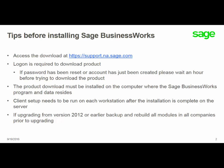Some tips before installing Sage BusinessWorks: access the download at support.na.sage.com. A login is required to download the product. If you have recently reset your password or the account has just been created, please wait an hour before trying to download the product. The product download must be installed on the computer where the Sage BusinessWorks program and data resides. You will not download the software on a client computer — the client setup needs to be run on each workstation after the installation is complete on the server.